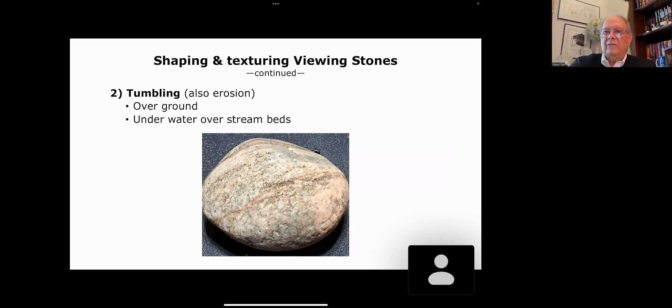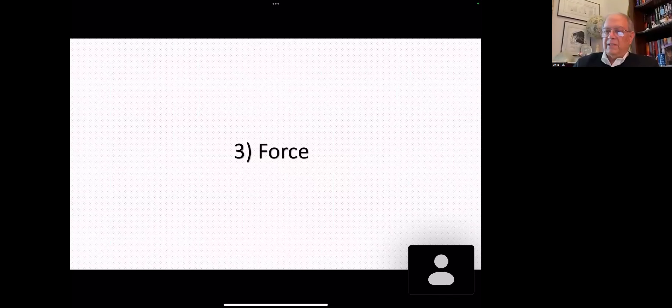Tumbling, another kind of erosion. It can be overground or under the water, bouncing along the stream bed. Tumbling, typically, you get a little smoother surface. This is a piece of granite, and it's usually the oval or kind of roundish shape. So let's build on those two and let's talk about force.